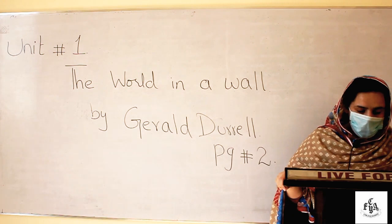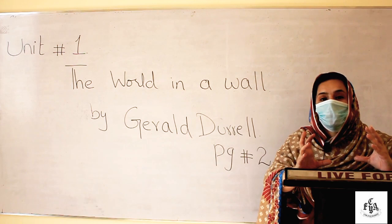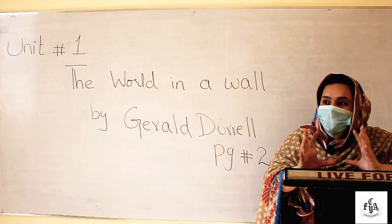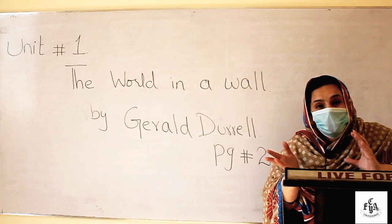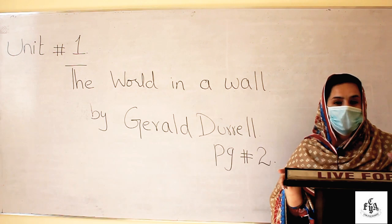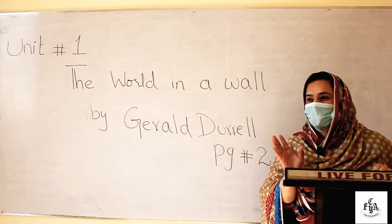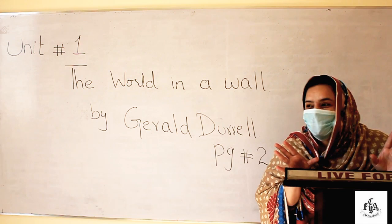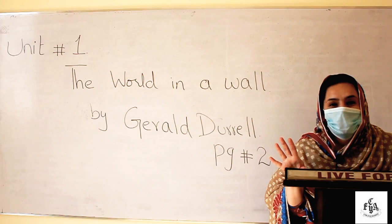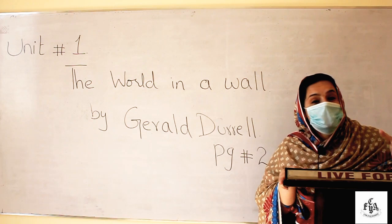'The inhabitants of the wall were a mixed lot.' Here 'inhabitants' means the residents — the insects living in that wall. 'Mixed lot' means there were numerous insects of different types. The writer explains which animals were there in the daytime and which were seen at night. He uses the beautiful phrase: 'they were divided into day and night workers.'